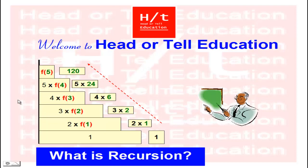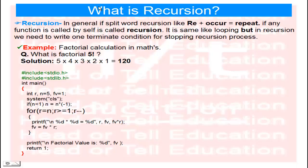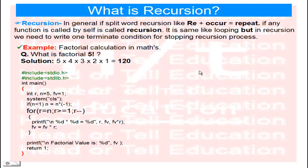Hello friends, welcome to Head or Tail Education. Today our topic is: what is recursion? According to the definition, if we split the word recursion — 're' plus 'occur' — it means repeat. So if any function is called by itself, it is called recursion. It is similar to looping, but in recursion we need to write one terminate condition for stopping the recursion process.